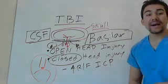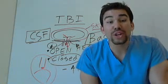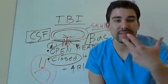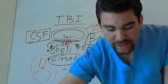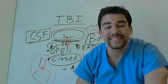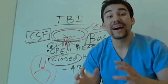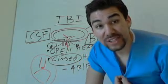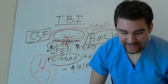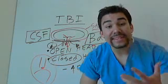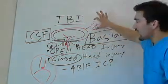Let's go into closed head injuries. There are three different types of closed head injuries. They include your contusion, which basically means a bruise in the brain; a concussion, which means your brain got rattled; and a laceration that has not impaired the integrity of your skull.